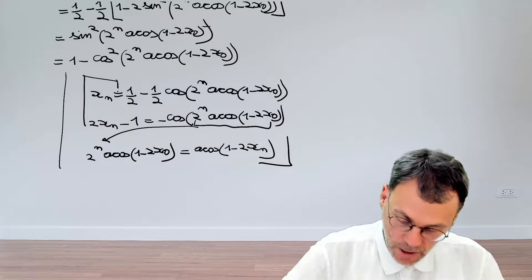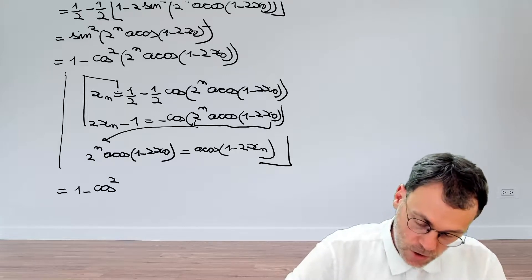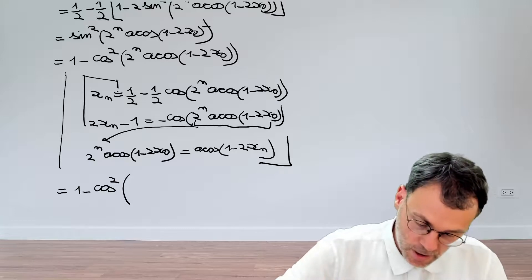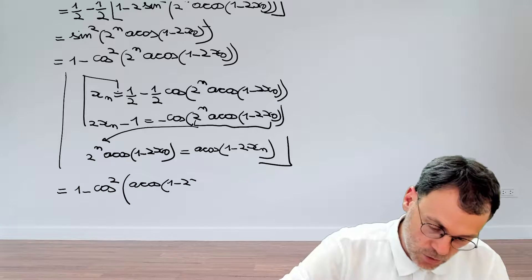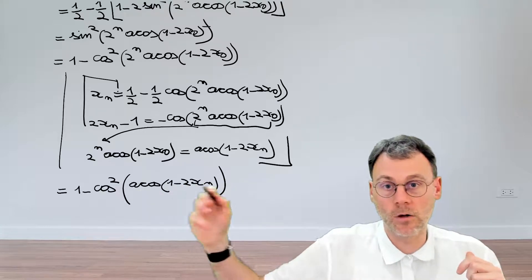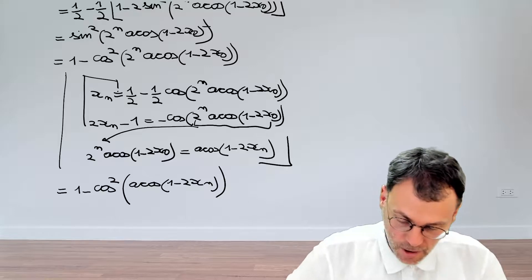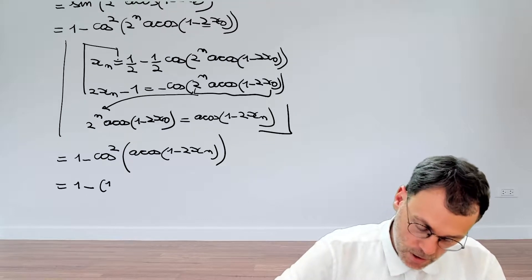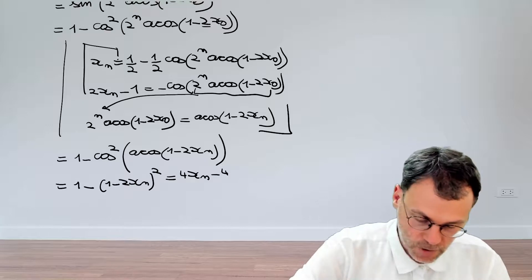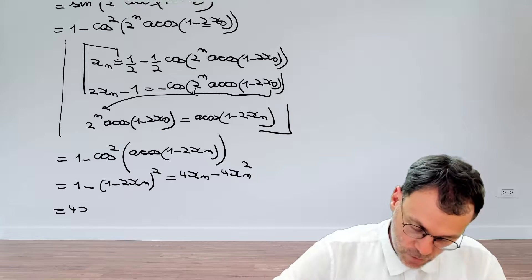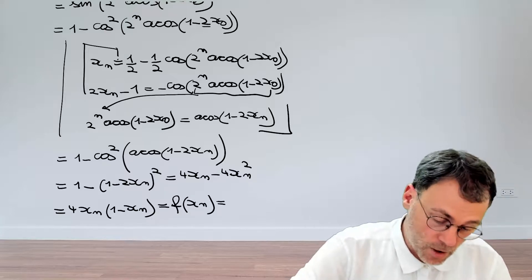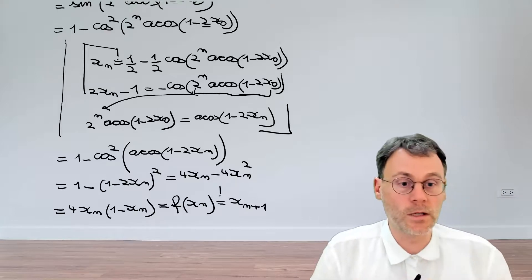Going back to what we had, we can write this as one minus cosine squared, and using our newfound expression for the argument, this is arc cosine of one minus two x_n. Cosine and arc cosine meet and annihilate, so we have one minus one minus two x_n squared, which becomes four x_n minus four x_n squared.